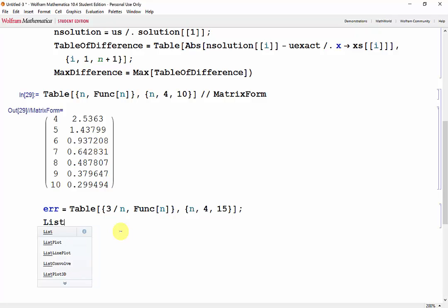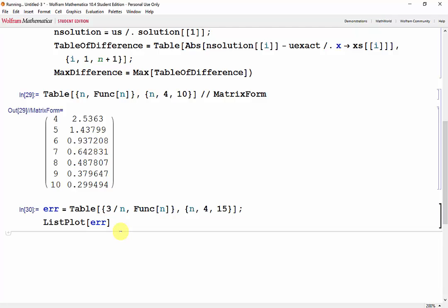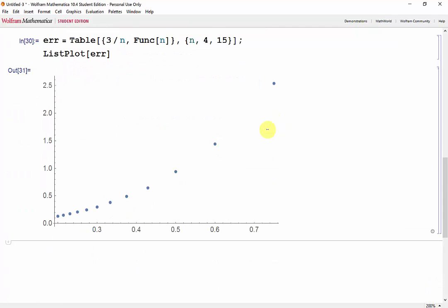Now let's ListPlot that just so we can see the values. It looks fairly quadratic.